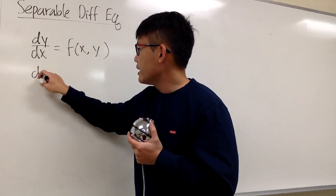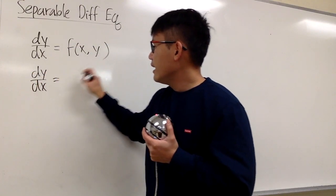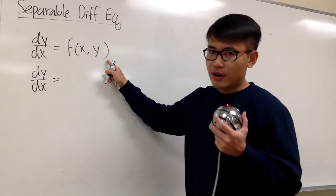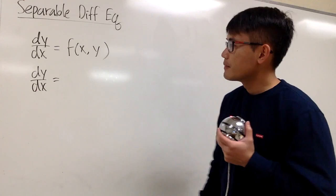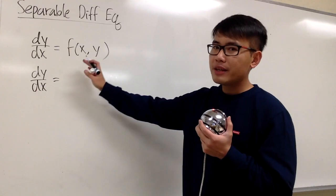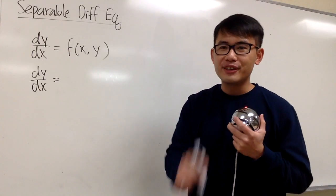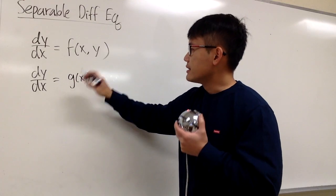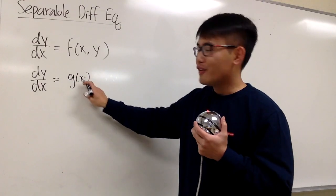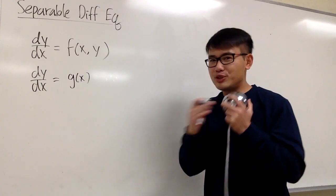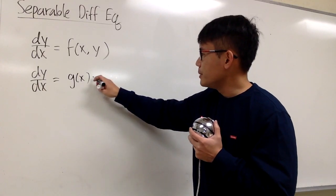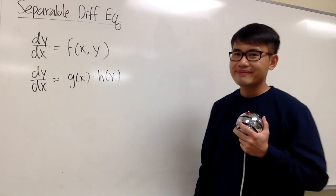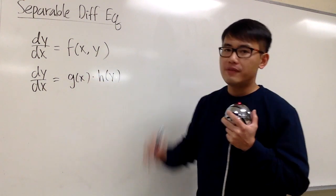Let me write this down again. dy/dx — our goal is to focus on the right-hand side first. This right here is a function in terms of both x and y together. Our first job is to separate the x and the y by factoring. Look at the right-hand side — I want to factor it as a function g of x, an expression in terms of just x, multiplied with h of y, a function in terms of just y. This is what we mean by separating the variables.